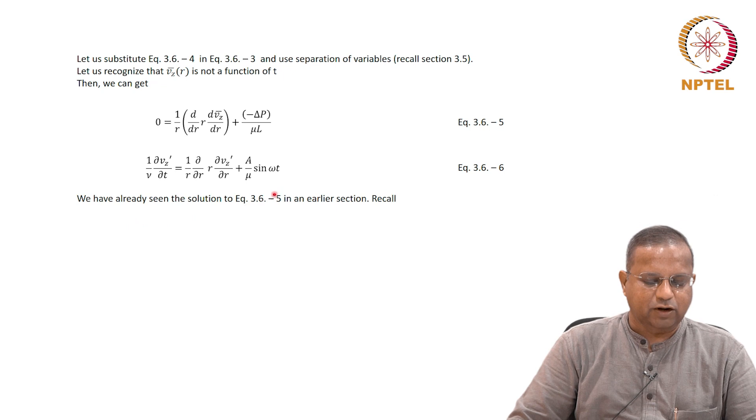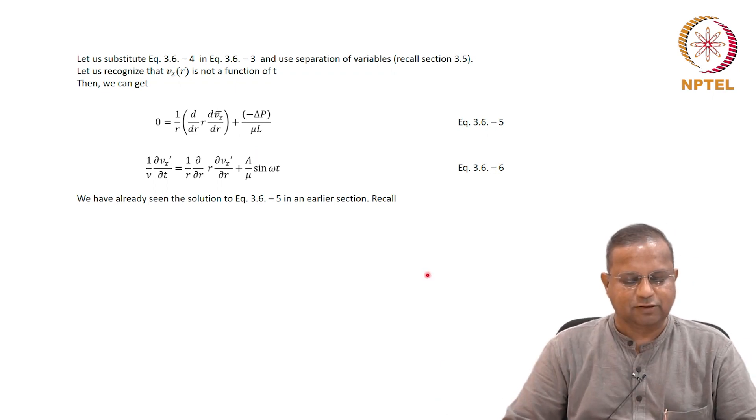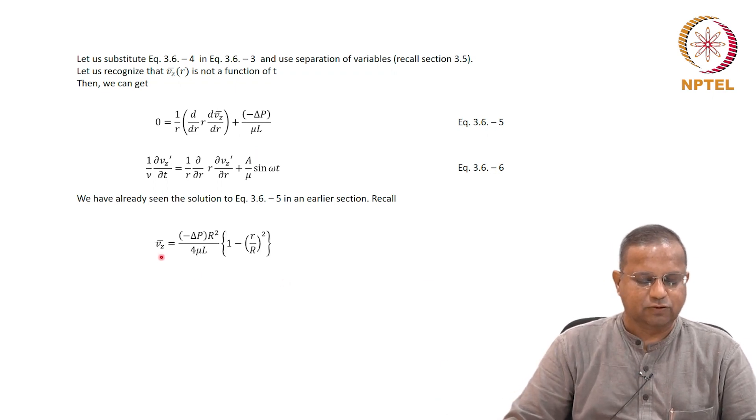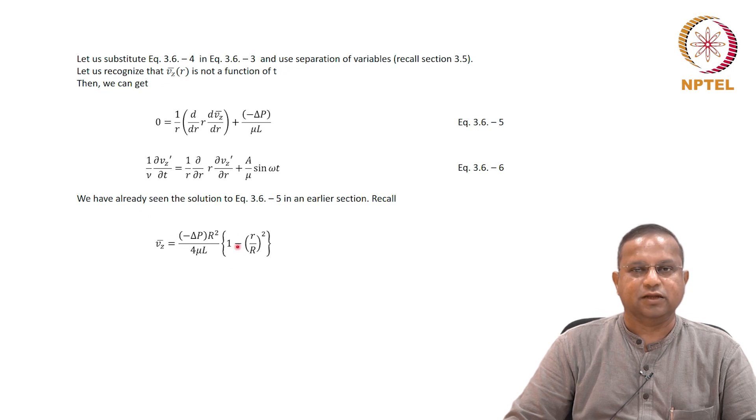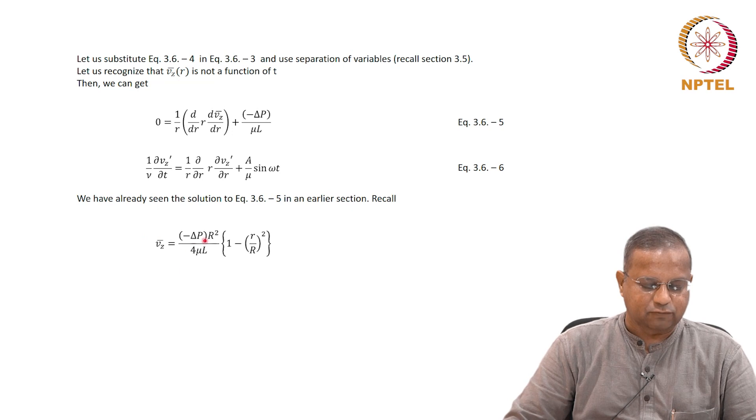We have already seen the solution to equation 3.6-5 in the earlier section. The average velocity component in laminar flow is: v_z_bar = -(delta p * r^2)/(4*mu*L) * (1 - r^2/R^2). That's equation 3.6-7.